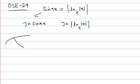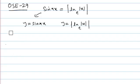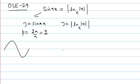We draw the graph of both functions and see the points of intersection. Every x-coordinate of a point of intersection will be a root. For sin(πx), the period is 2π/π = 2, and we know the typical cycle of sin with period 2.